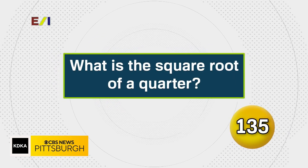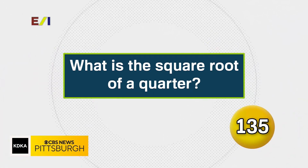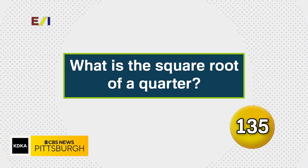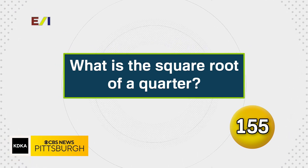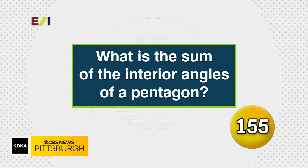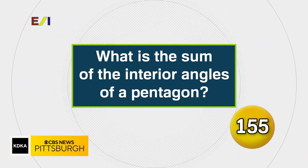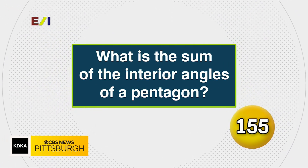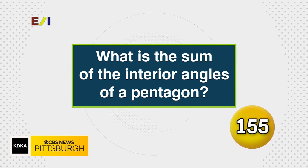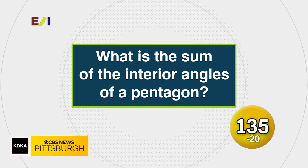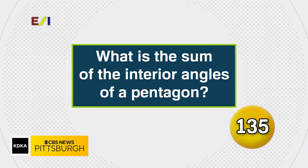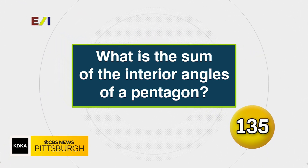What is the square root of a quarter? A half. A half is correct. Here's your second Math Time question. What is the sum of the interior angles of a pentagon? 450. Very close — 540 was the answer for that one. You got one right and one wrong, so your score remains the same and you still have 135 points on the board.